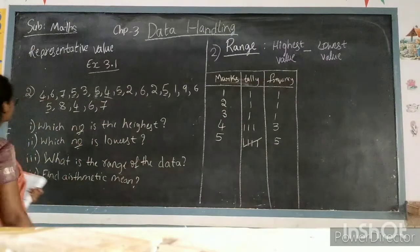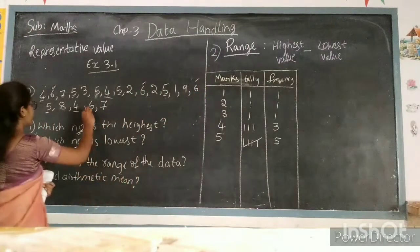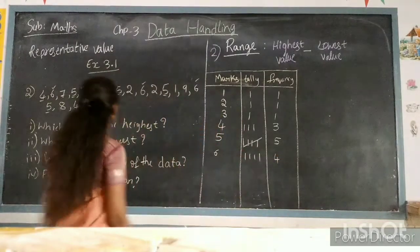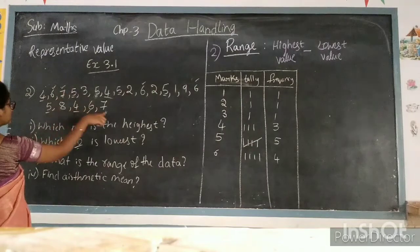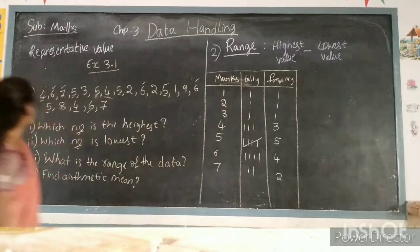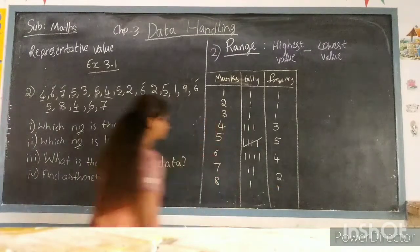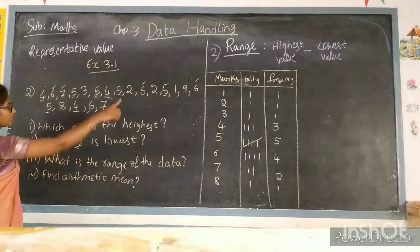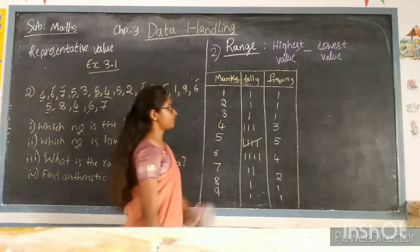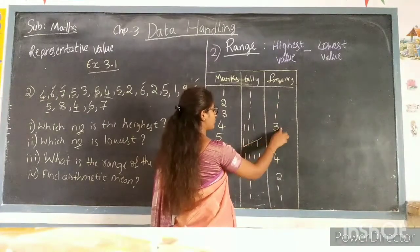Number 6 is repeated 4 times — frequency 4. Number 7 is also there. Number 8 is there once. Number 9 is also there. Number 10 is not present. The total frequency count comes to 20.